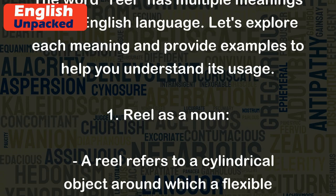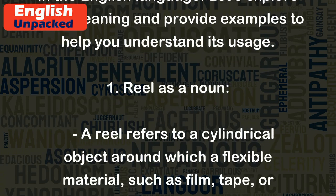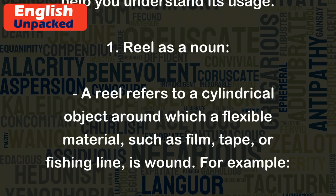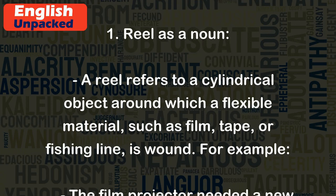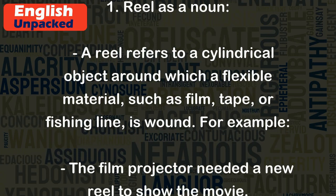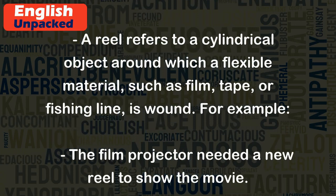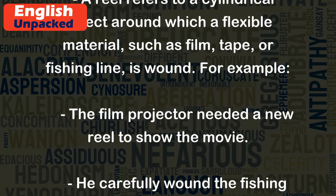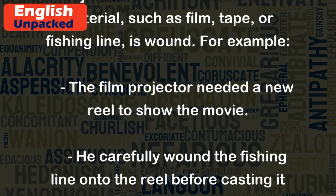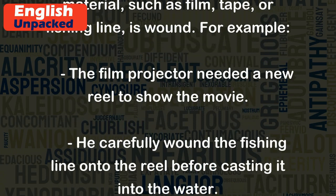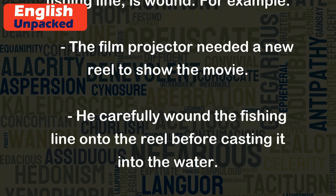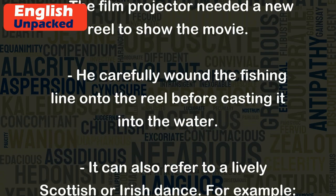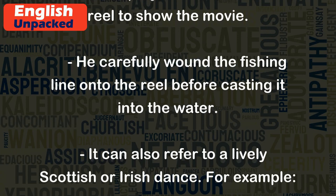1. Reel is a noun. A reel refers to a cylindrical object around which a flexible material, such as film, tape, or fishing line, is wound. For example: the film projector needed a new reel to show the movie. He carefully wound the fishing line onto the reel before casting it into the water.